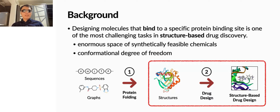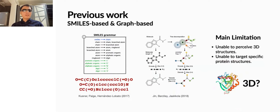The challenge is basically two-fold: the enormous space of feasible chemicals and conformational degree of freedom. In recent years, we have witnessed the rapid development of deep generative models in drug design. The majority of them are based on string and graph representation of molecules. However, these methods are hardly applicable to finding molecules that fit a protein binding site, because they are unable to perceive 3D structures as they operate on 1D and 2D representations.